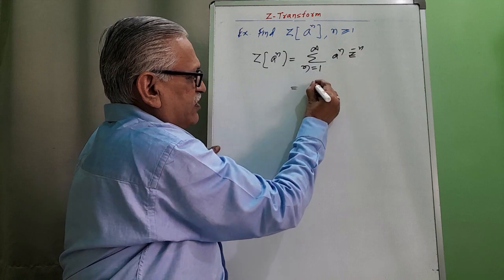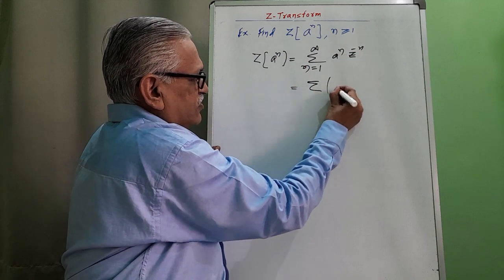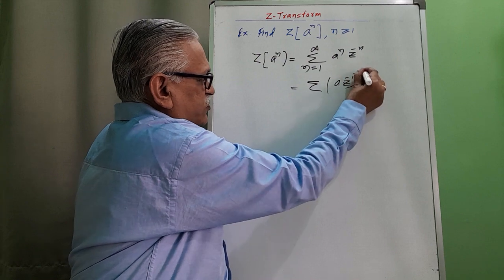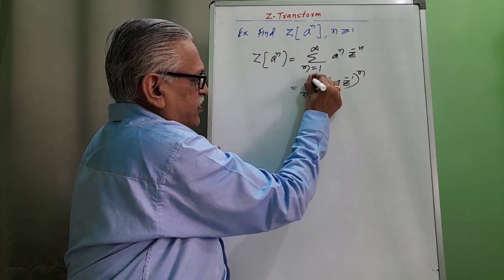Then combining this power, we get summation of A·Z raised to minus 1 whole raised to N, N changes from 1 to infinity.